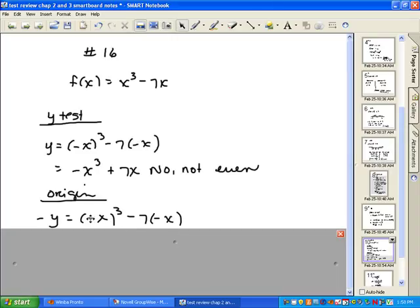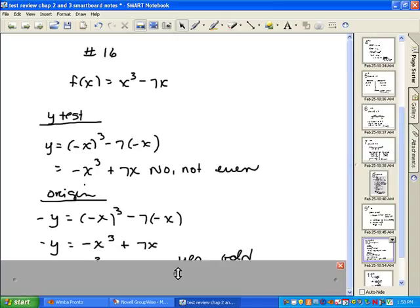Remember that a negative to an odd is a negative. So that one becomes a negative. A negative times a negative is a positive. And I have a negative y out here. Remember when you have a negative y, what you want to do to get the y by itself is change all the signs.